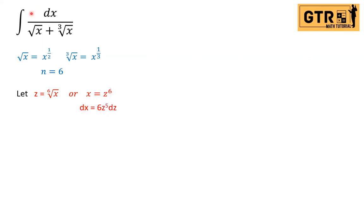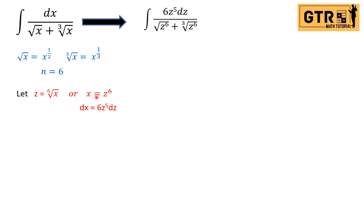Now we substitute into the integral, expressing everything in terms of z. The numerator becomes six z to the fifth dz. For the denominator, substituting x equals z to the sixth: square root of x becomes square root of z to the sixth, and cube root of x becomes cube root of z to the sixth. Writing in rational exponent form, square root of z to the sixth is z raised to six over two.